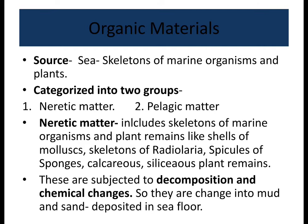Organic materials have their major sources as skeletons of marine organisms and plants. After decomposition, the remains of these marine organisms form organic materials, characterized into two groups: neurotic matter and pelagic matter. Neurotic matter includes skeletons of marine organisms and plant remains — shells of molluscs, skeletons of radiolaria, spicules of sponges, and calcareous and siliceous plant remains — which are subjected to decomposition and chemical changes, transforming into fine sediments and sand deposited on the seafloor.